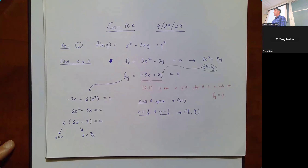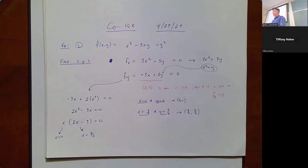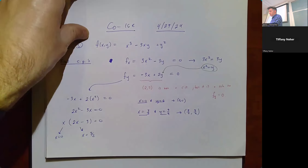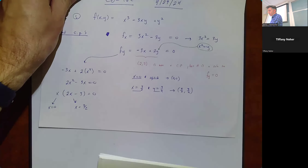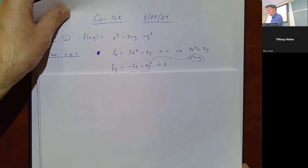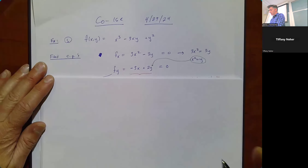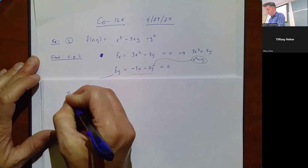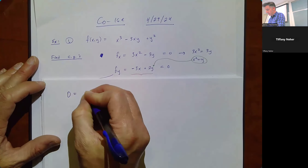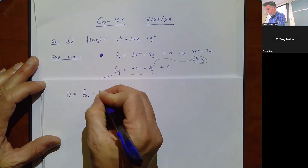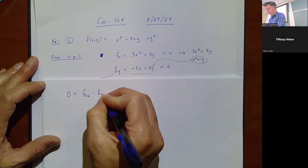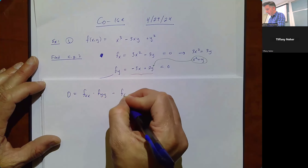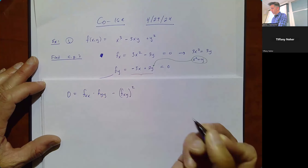The second part is classification. We're going to find the discriminant D = fxx · fyy - (fxy)², and plug in our critical points to figure out what we've got.